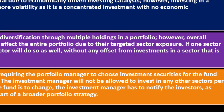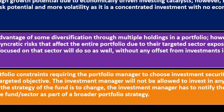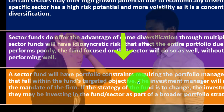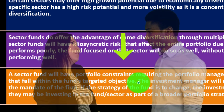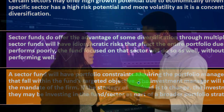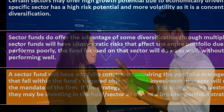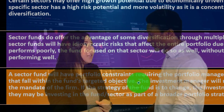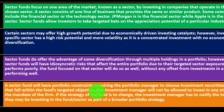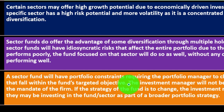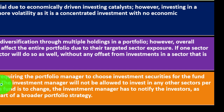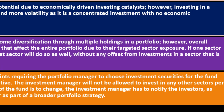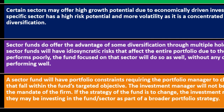A sector fund will have portfolio constraints requiring the portfolio manager to choose investment securities that fall within the fund's targeted objective. You can't blame the manager if the entire sector declines — if all technology goes down, the fund manager can only mitigate losses; they're restricted to that sector. For an actively managed sector fund, it's fair to expect the manager to beat the index for that particular sector area.